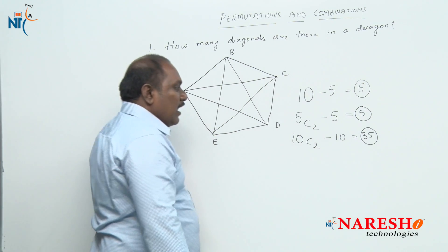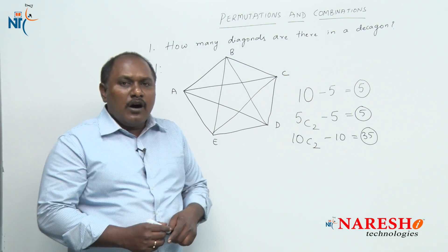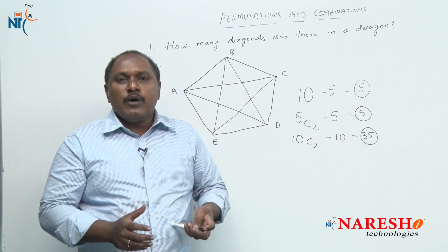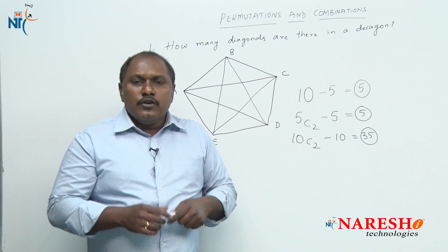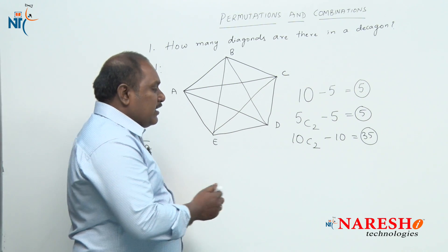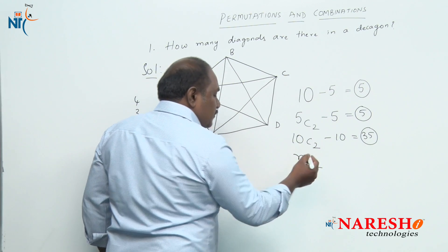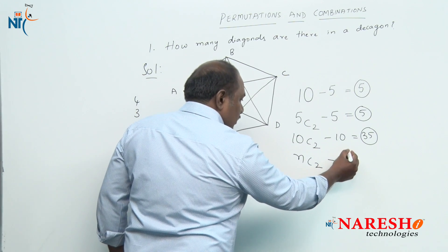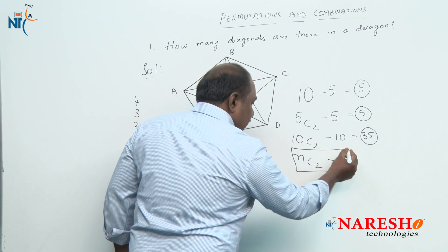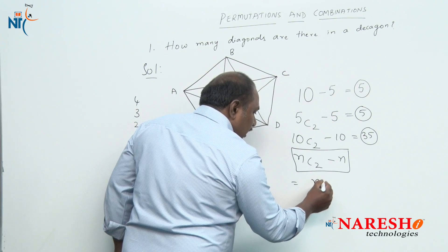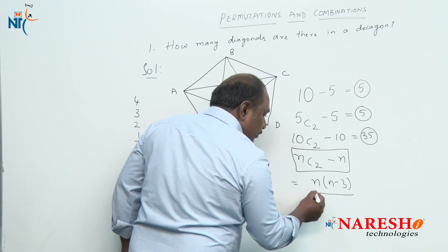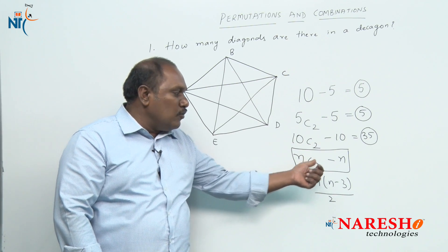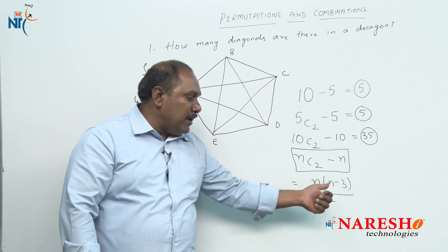Now, how do we frame a general formula? To construct an n-sided polygon, we require n non-collinear points. Using n non-collinear points, the total number of line segments we can draw is nC2, from which we subtract the number of sides n. So nC2 minus n gives the number of diagonals, which simplifies to n(n−3)/2. The number of diagonals of an n-sided polygon is nC2 − n, or equivalently n(n−3)/2.